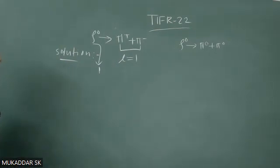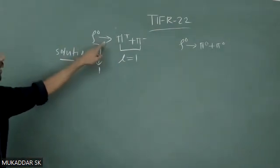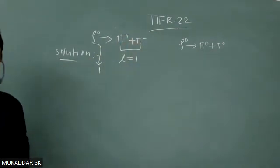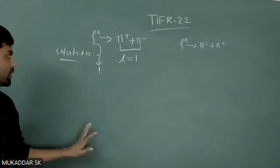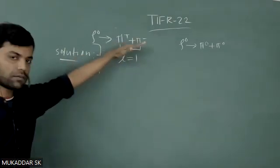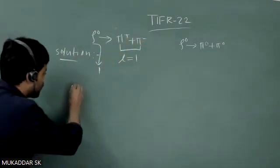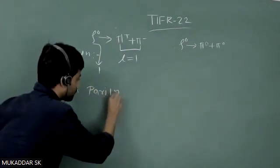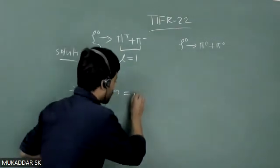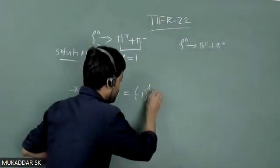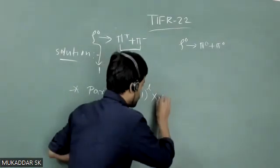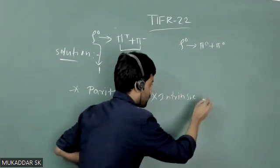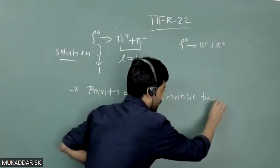As mentioned, this decay is only allowed by strong interaction, and for strong interaction parity should be conserved. Now how to calculate that parity? Total parity is nothing but its orbital part, that is minus one to the power l, then multiplied by the intrinsic parity.